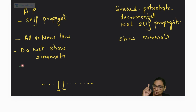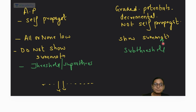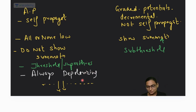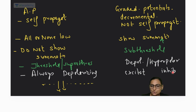Action potentials can be produced only by a threshold or supra-threshold stimulus. Graded potentials can be produced by sub-threshold stimuli because they show summation. Action potentials are by and large always depolarizing — with one exception to be discussed. Graded potentials can be depolarizing (excitatory) or hyperpolarizing (inhibitory) — for example, EPSP and IPSP.